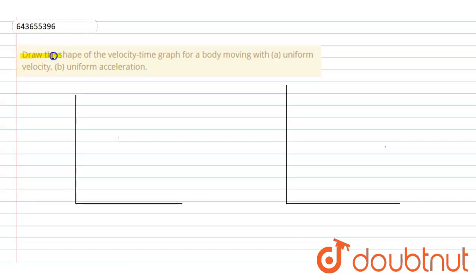So here the question is: draw the shape of the velocity-time graph for a body moving with uniform velocity and uniform acceleration.